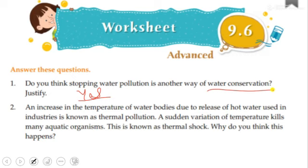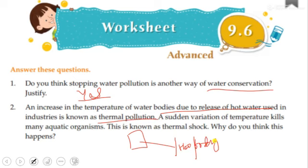An increase in the temperature of a water body due to the release of hot water used in industries is known as thermal pollution. Hot water released from industries causes thermal pollution in the water body. A sudden variation of temperature kills many aquatic organisms — if hot industrial water enters a stream, the sudden temperature change kills microorganisms, fish, and aquatic plants.